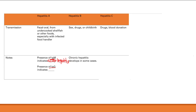Hepatitis C transmission is through drugs and blood donation. Blood donation is much less common now thanks to blood screening, but it still happens. Sexual transmission of hepatitis C can occur but is much less common than for hepatitis B. Chronic hepatitis develops in most cases of hepatitis C infection.